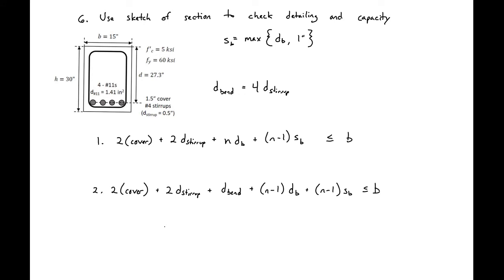We'll next need to make sure that all of our bars fit in our available cross section width with the required spacing that's required by the ACI. We'll do this with our two checks and our spacing requirements. First, our spacing requirements are the maximum of our bar diameter and one inch. For us, we'll have the bar diameter controlling. We also need to find the diameter of our bend of our stirrups, which is four times the diameter of our stirrup. Four times 0.5 inches is two inches. Now we can plug all of our values into our two ACI expressions.